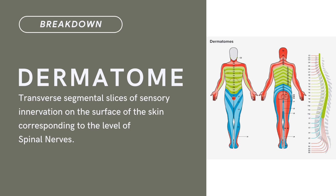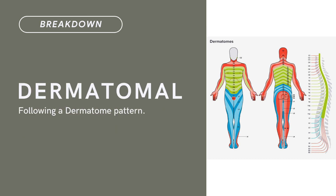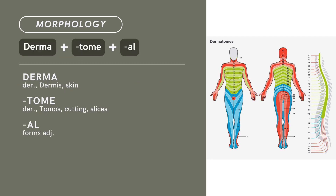Compound term: dermatome. Brief definition: transverse segmental slices of sensory innervation on the surface of the skin, corresponding to the level of spinal nerves. Dermatomal: following a dermatome pattern. Term morphology: compound of derma plus tome plus -al. Derma is derived from dermis, meaning skin.